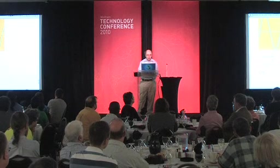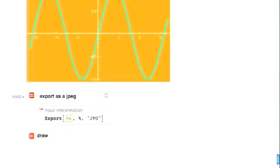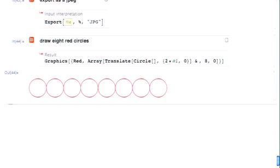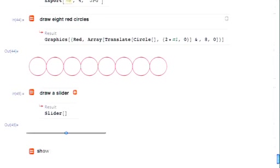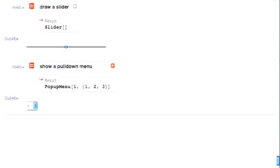We can do all kinds of things like this. We can say, draw eight red circles. And now, it will figure out some reasonable way to do that. It can say something like, draw a slider. And it'll be able to figure out things about creating an interface for us. Show a pull down menu. So you get the idea that you might be able to start creating complete Mathematica, interactive Mathematica programs, just by doing free-form linguistics.